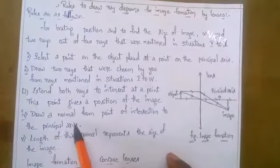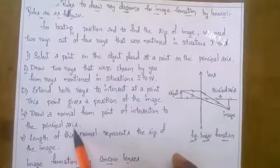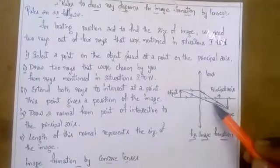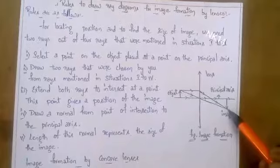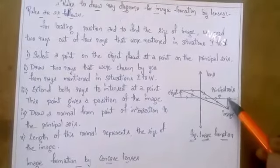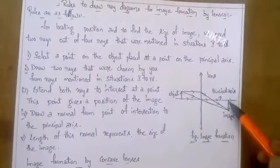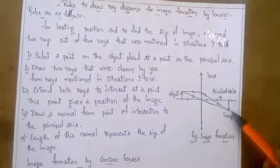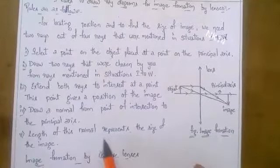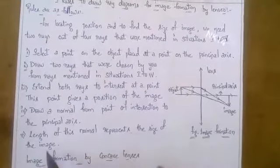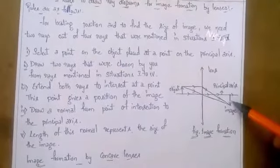Next, extend both rays to intersect at a point — this point gives the position of the image. As both rays are intersecting at one point, we draw one ray perpendicular toward the principal axis, and this perpendicular ray is the normal. The length of this normal represents the size of the image — as much normal as you get, that is the size of the image.